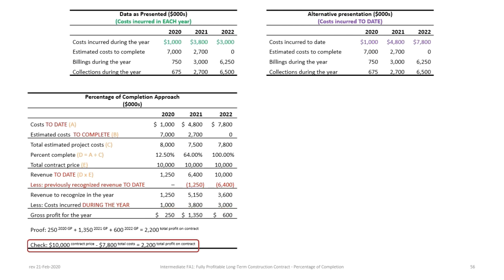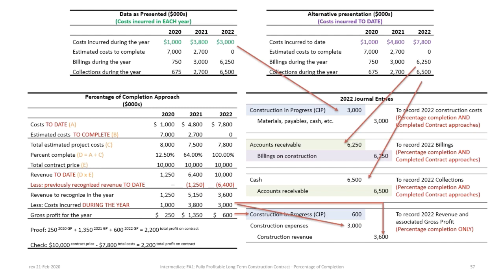The construction price minus $7.8 million in total construction costs gives $2.2 million on the contract. Summarizing the 2022 journal entries: debit Construction in Progress for $3 million in costs; debit Accounts Receivable and credit Billings on Construction for $6,250,000; record cash collection of $6,500,000. Finally, record gross profit: credit Construction Revenue $3.6 million, debit Construction Expense $3 million, debit Construction in Progress $600,000 gross profit.